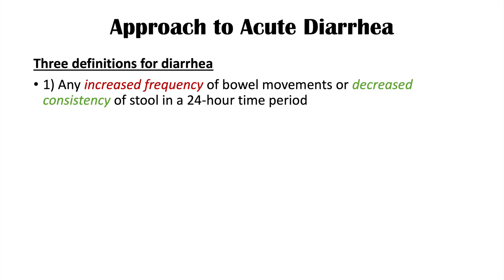So what is diarrhea? There are actually three definitions. The first definition is any increased frequency of bowel movements or decreased consistency of stool in a 24-hour time period. This definition is a bit vague — there are really no numbers to quantify it. It could be any increase from a person's baseline, or stool that is a bit watery or softer than usual, occurring in a 24-hour period.